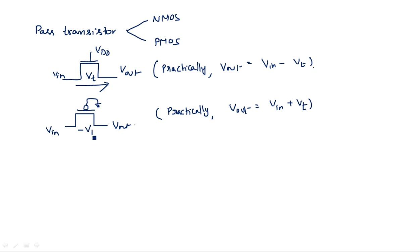The PMOS transistor has a negative threshold voltage, so Vout equals Vin minus (minus VT), which becomes Vin plus VT. In practical applications using a pass transistor — either NMOS or PMOS — we will not get 100% voltage swing. Logic 0 means 0 volts and logic 1 means 5 volts, but this exact swing will not occur because of the additional subtracting or adding voltages.